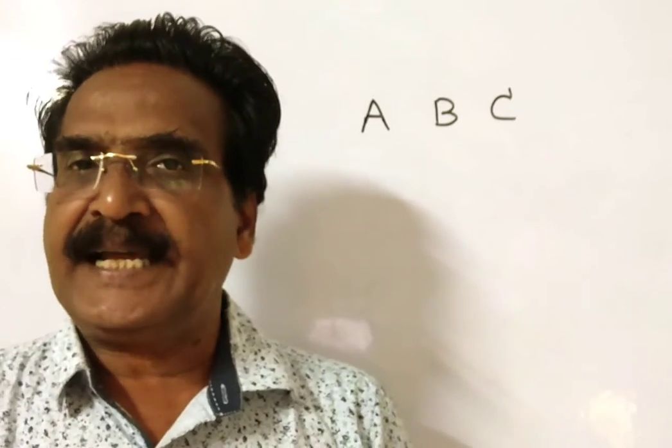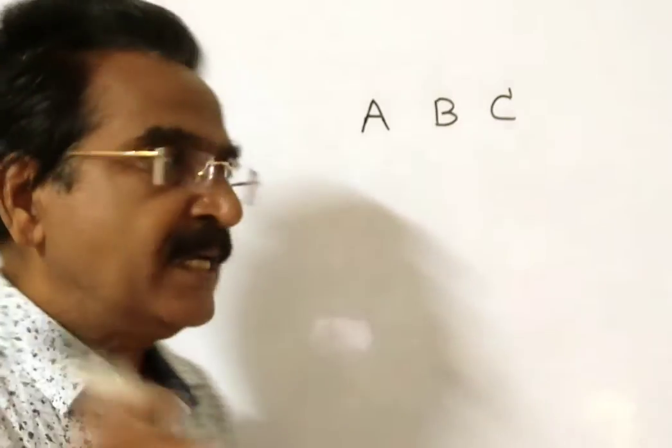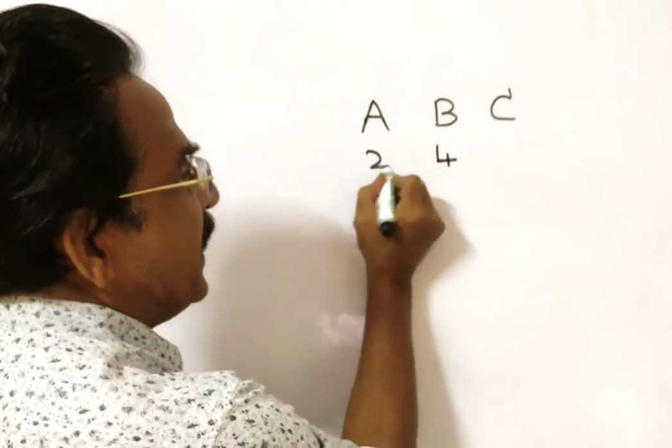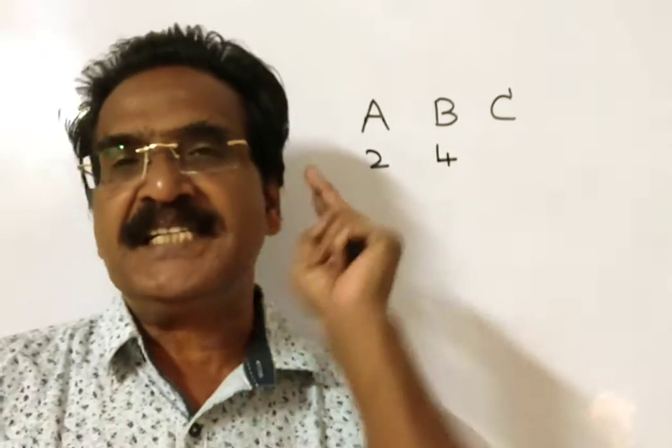See friends, A is 50% as efficient as B. A is 50% as efficient as B implies if B does 4 units of work per day, A can do only 2 units of work.